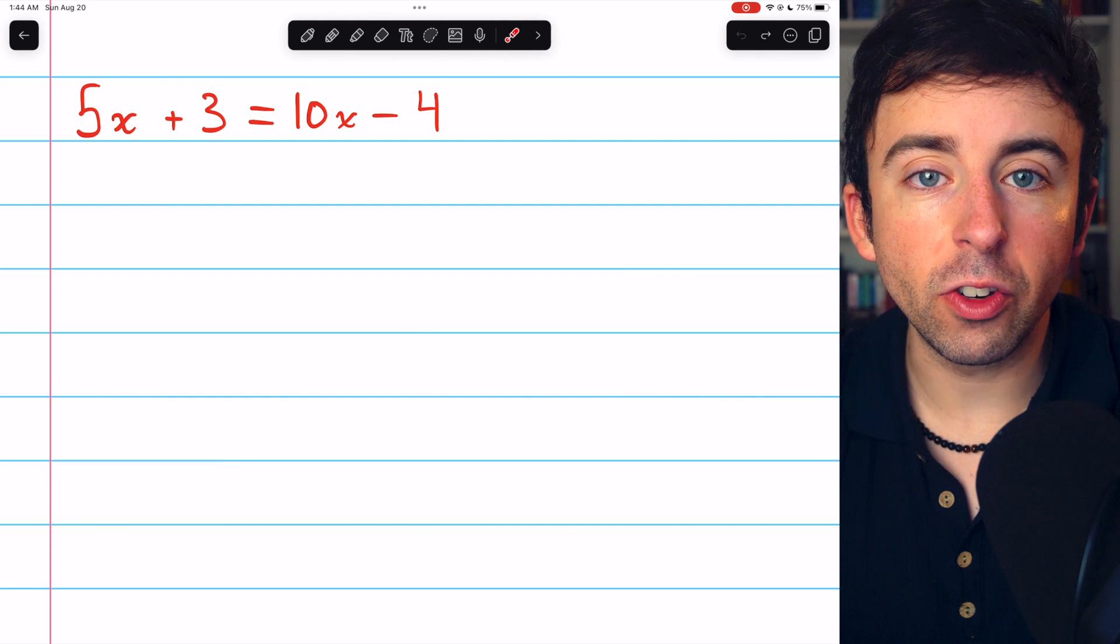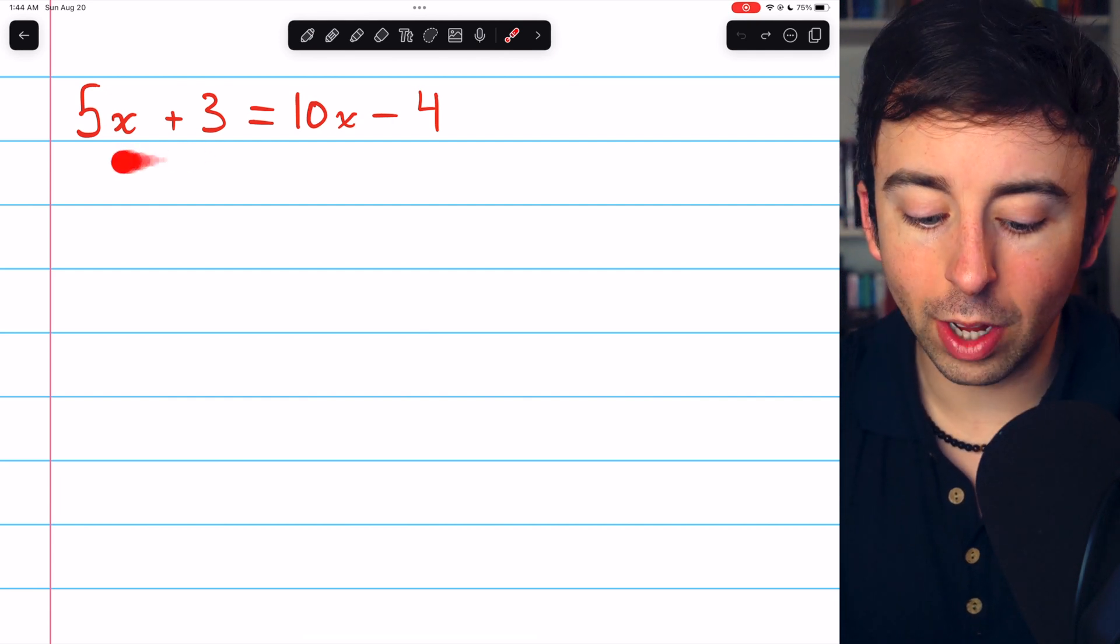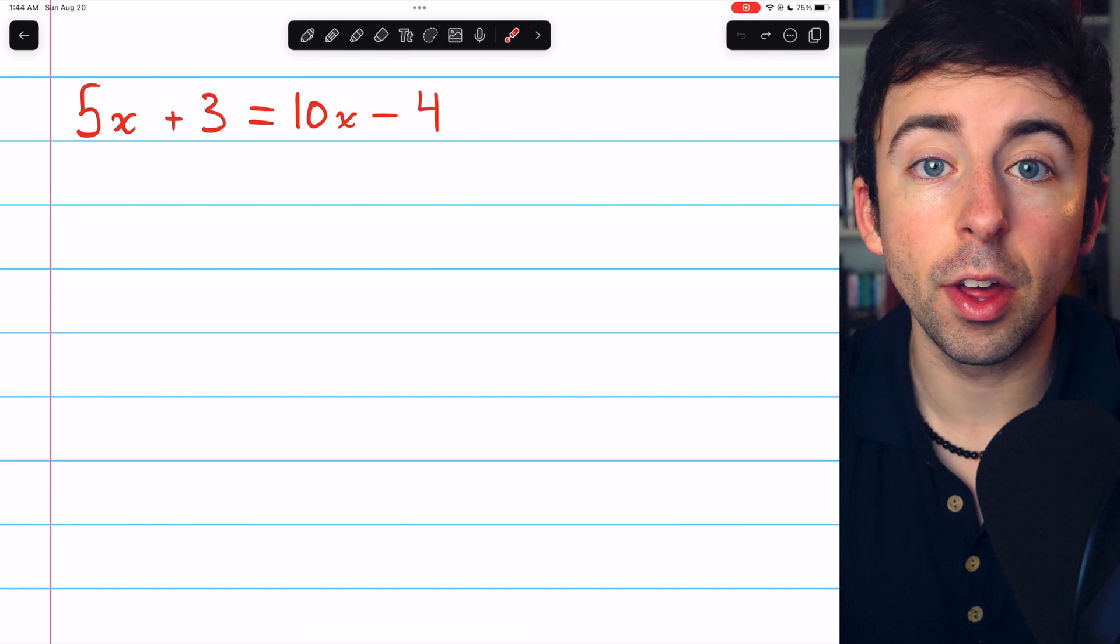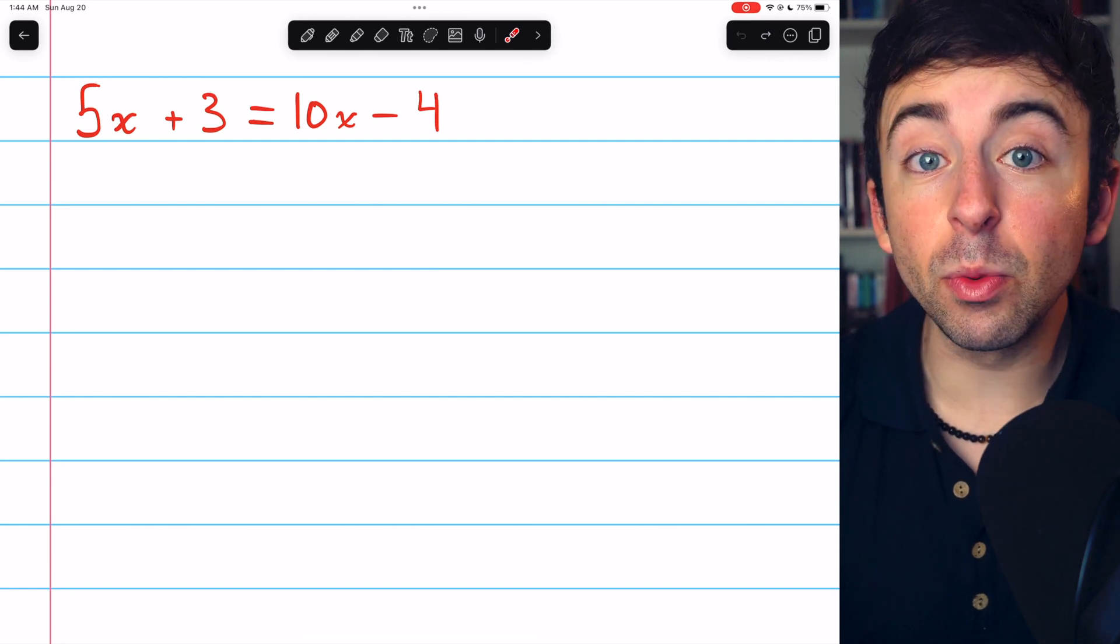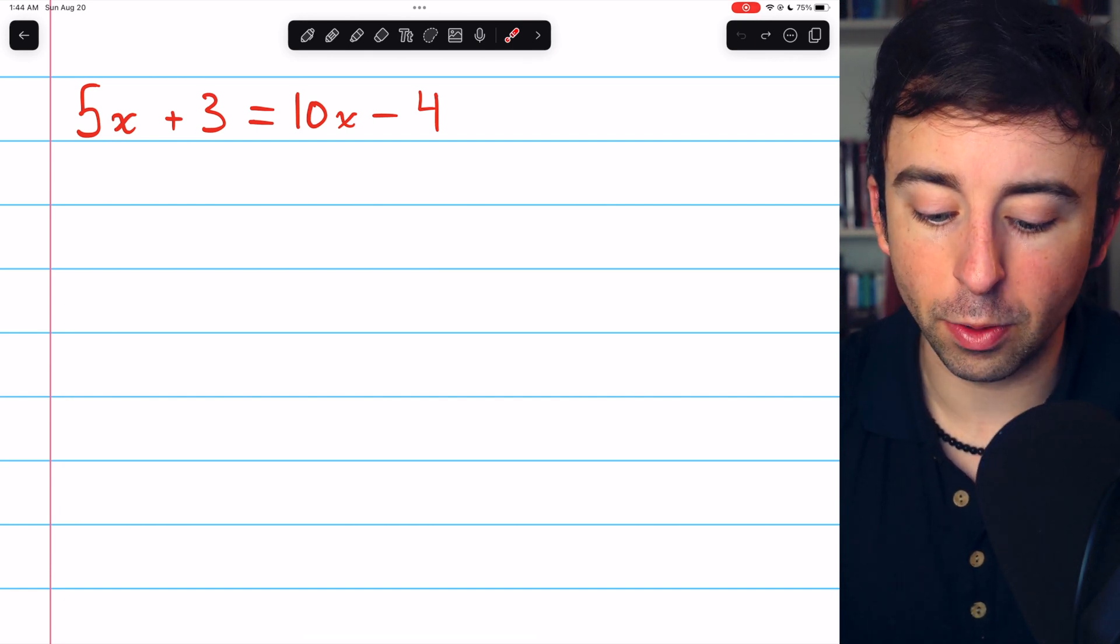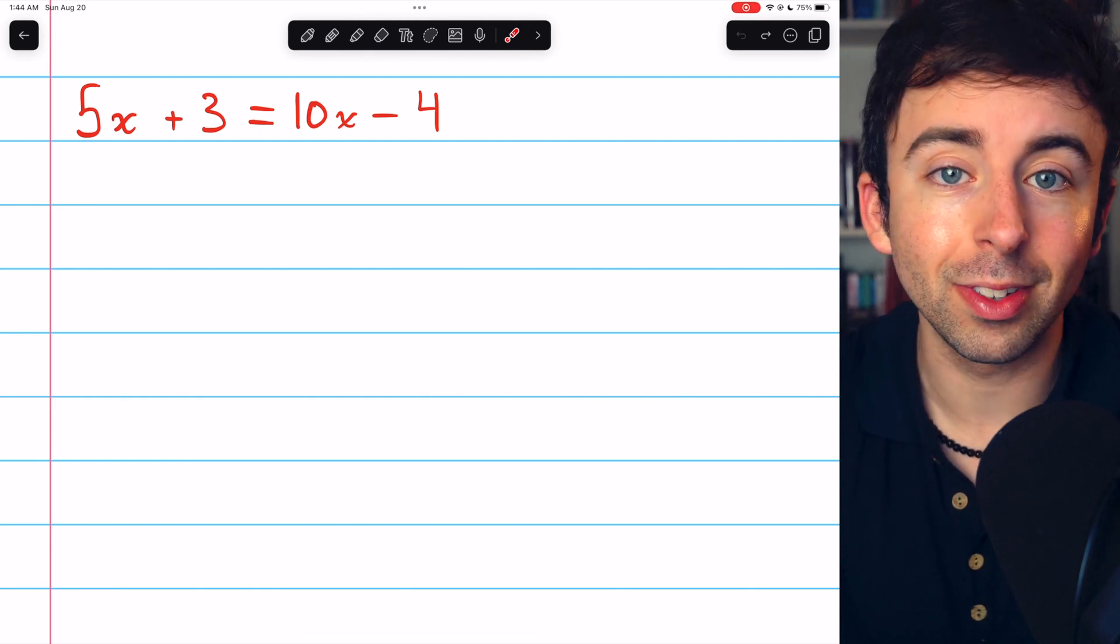To solve such an equation, we need to bring all the variable terms to one side, often the left, although it doesn't actually matter, and we need to bring all the constant terms to the other side. Often we move those to the right.